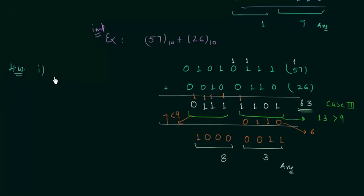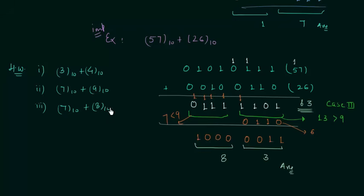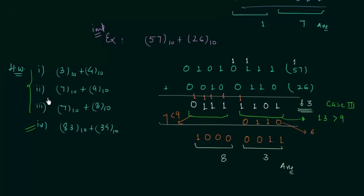Now we will move to homework problems. In the first homework problem perform the addition 3 plus 4. In the second, perform 7 plus 9. In the third, perform 7 plus 8. And in the last homework problem perform the addition 83 plus 34. All these problems are very important — especially the last one, which is similar to the 57 plus 26 example. In the first three problems you will find all three cases. Post your answers in the comment section. This is all for this presentation; see you in the next one.